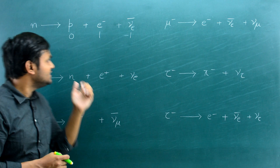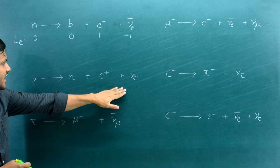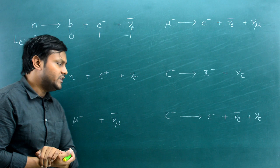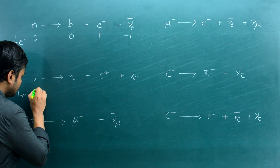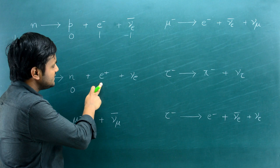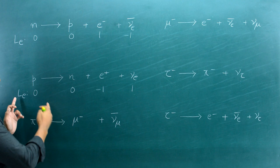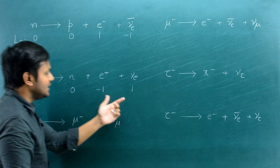For positive beta decay, a proton becomes a neutron and emits a positron (anti-electron) and an electron neutrino. The proton and neutron have electron lepton number 0. The anti-electron has −1 and the electron neutrino has +1. Left-hand side: 0; right-hand side: −1 + 1 = 0. The lepton quantum number for electrons is again conserved.